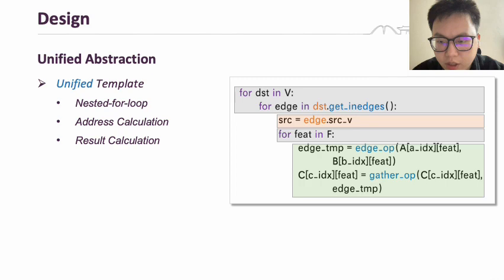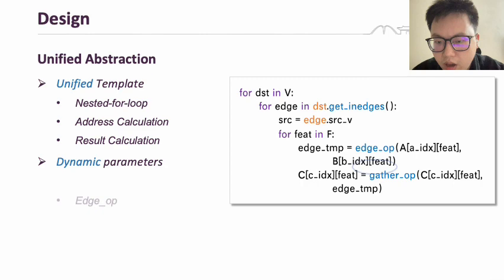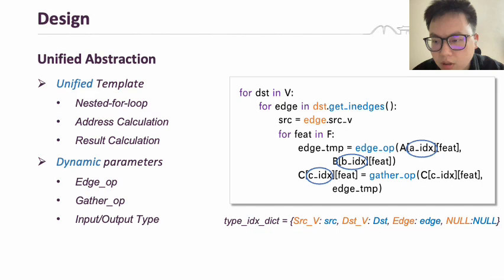We then use dynamic input parameters: edge operators, gather operators, and input-output tensor type. The tensor type determines the addressing pattern of the corresponding tensor. By using these unified abstractions and dynamic parameter specifications, we achieve a unified expression of the semantics of all graph operators.